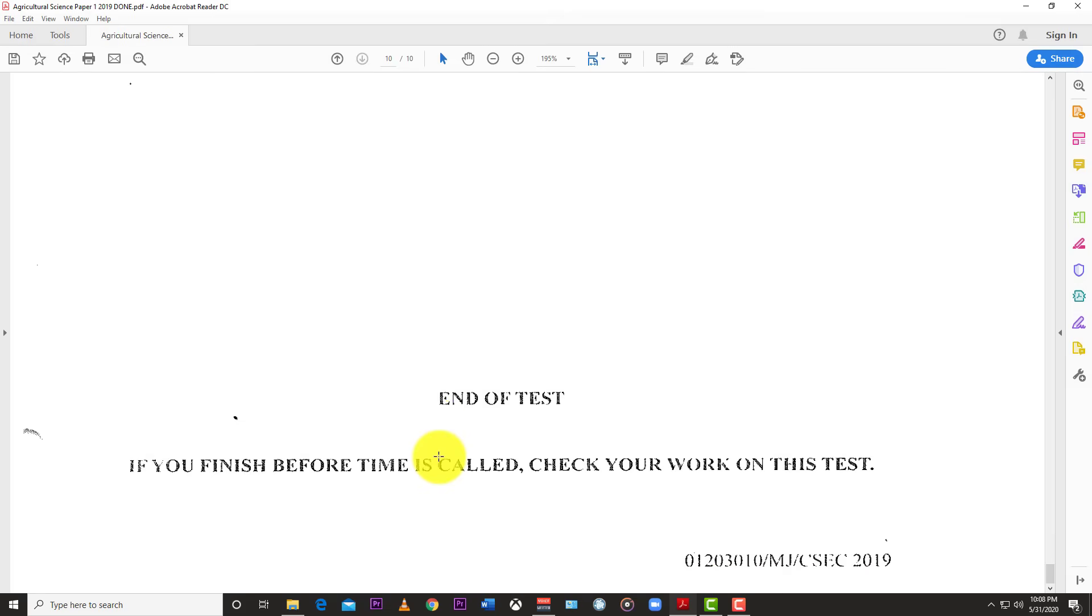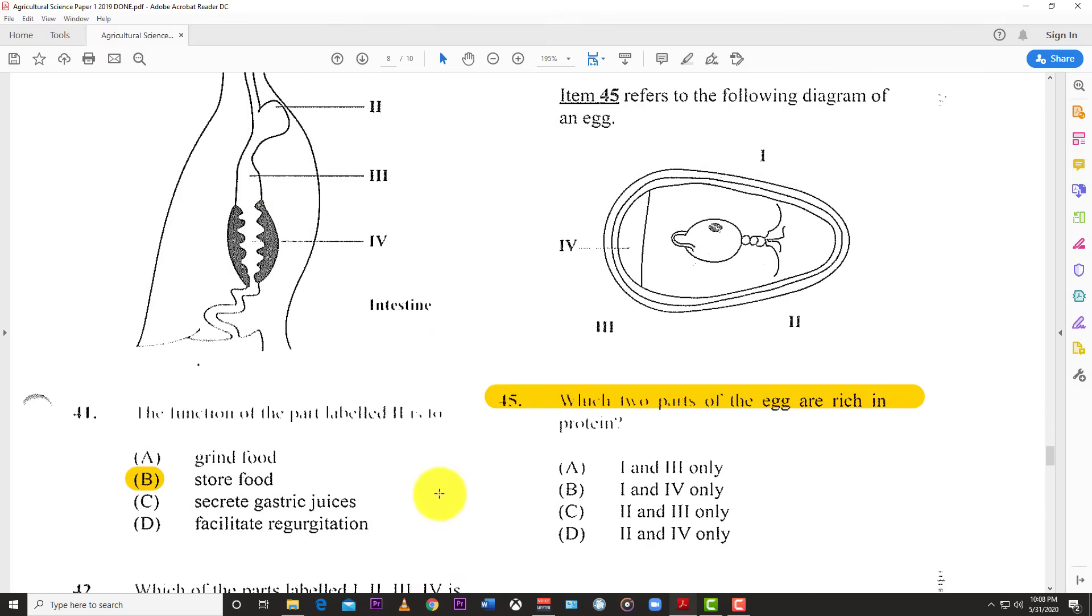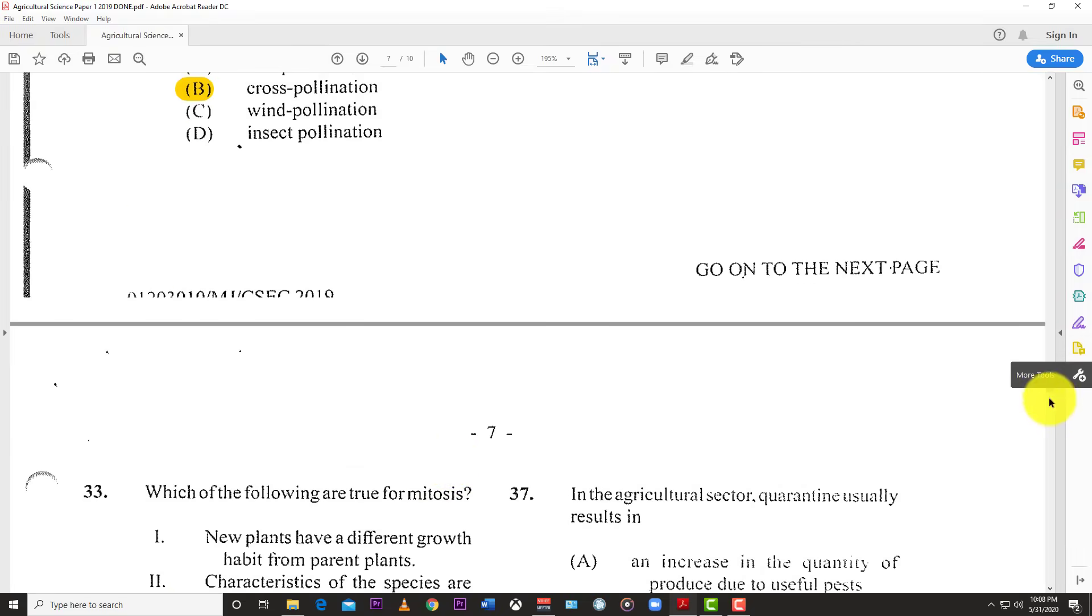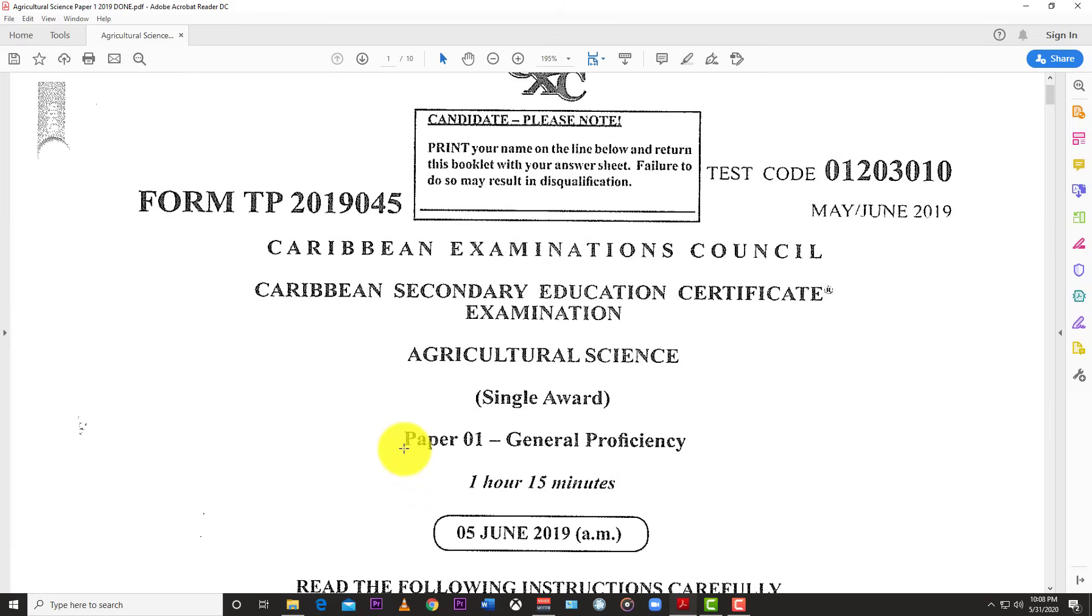That's it for the May June 2019 single award Agricultural Science Paper 1 from CSEC. I'm going to try and do some more. If I get any more agriculture papers I'll do them, and I'll try to do some double awards. The only way to know is to like, subscribe, and hit the notification bell so you know when Learn SKN drops another agricultural science video. Thanks for watching.